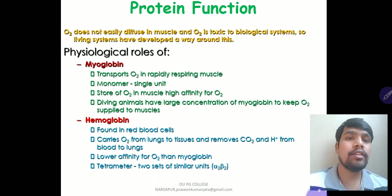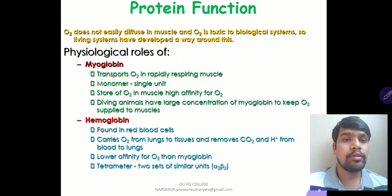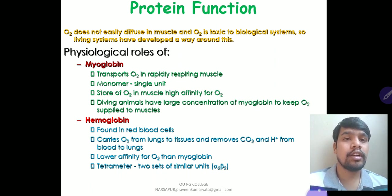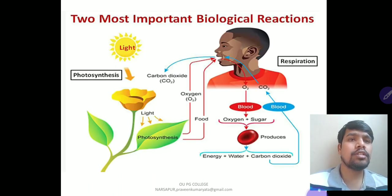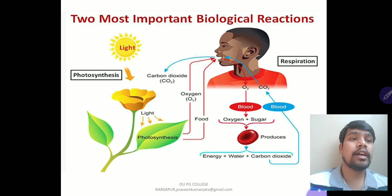Hemoglobin is found in red blood cells (RBCs) and carries O2 from the lungs to tissues while removing CO2 and H+ from blood to the lungs. It has a lower affinity for O2 than myoglobin. It has a tetrameric structure — two sets of similar units, alpha-2 and beta-2. The two most important biological reactions are photosynthesis and respiration.